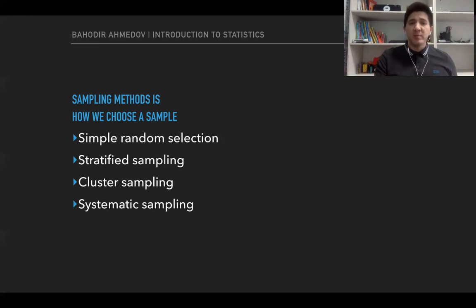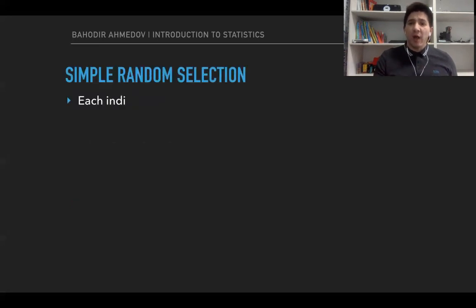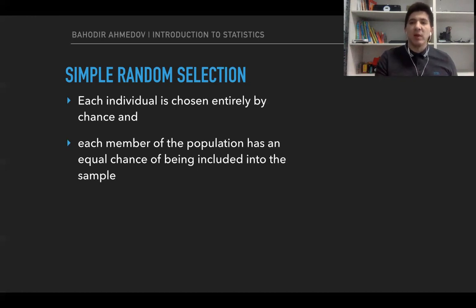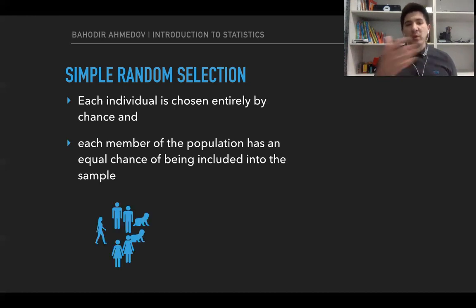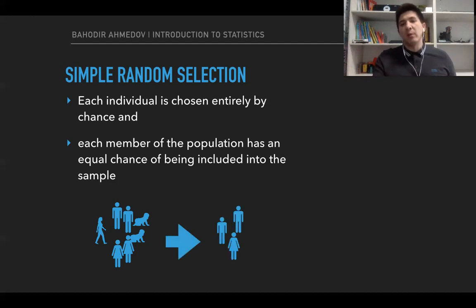Simple random selection is when we choose people from the population randomly, where every member of the population has equal chances to be chosen. For example, if the population includes males, females, children, and elderly people, we can choose some of them randomly — this is called simple random selection.